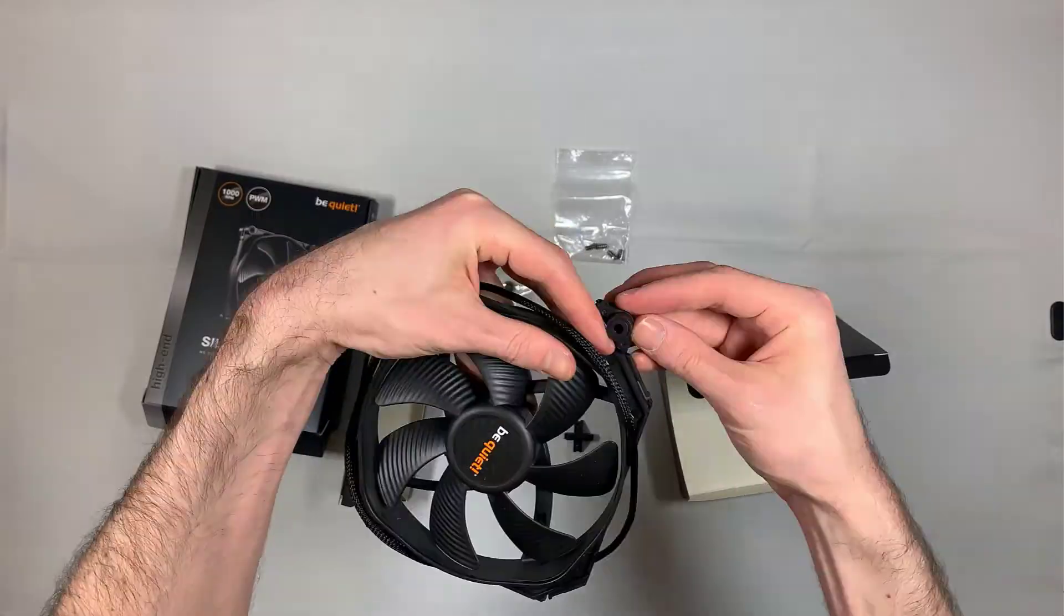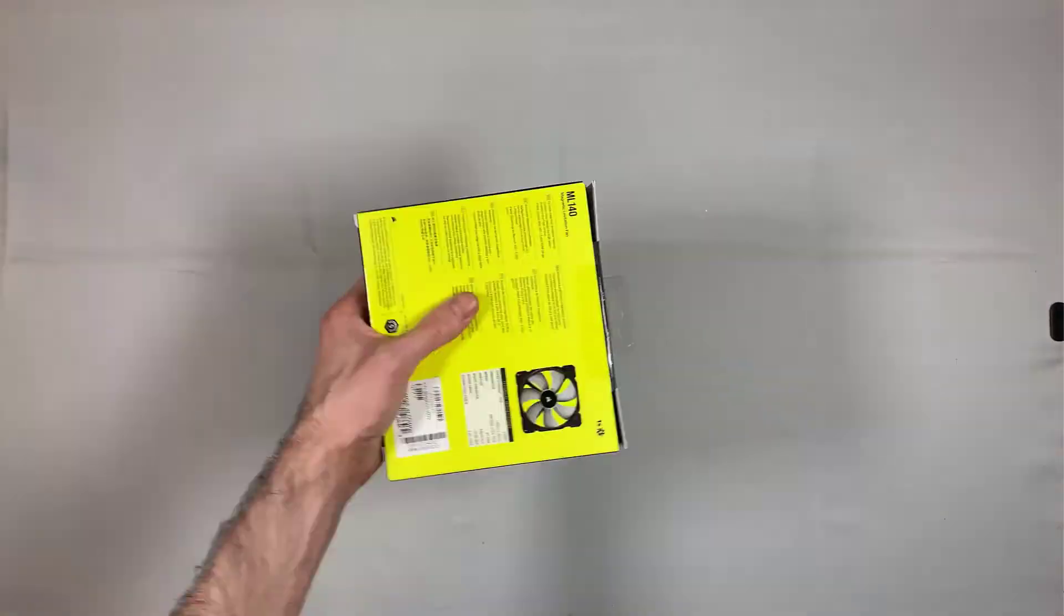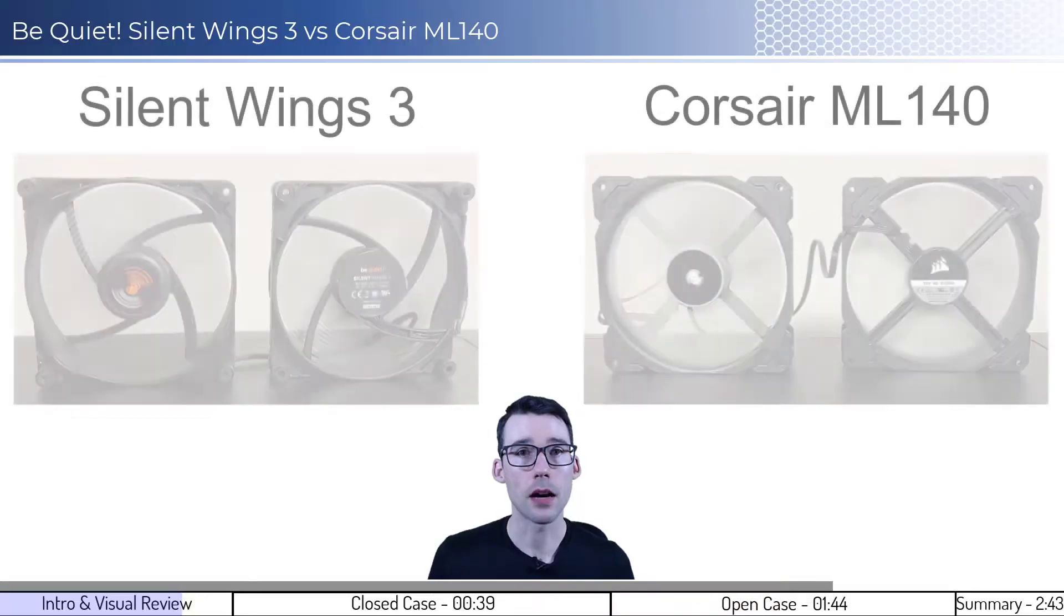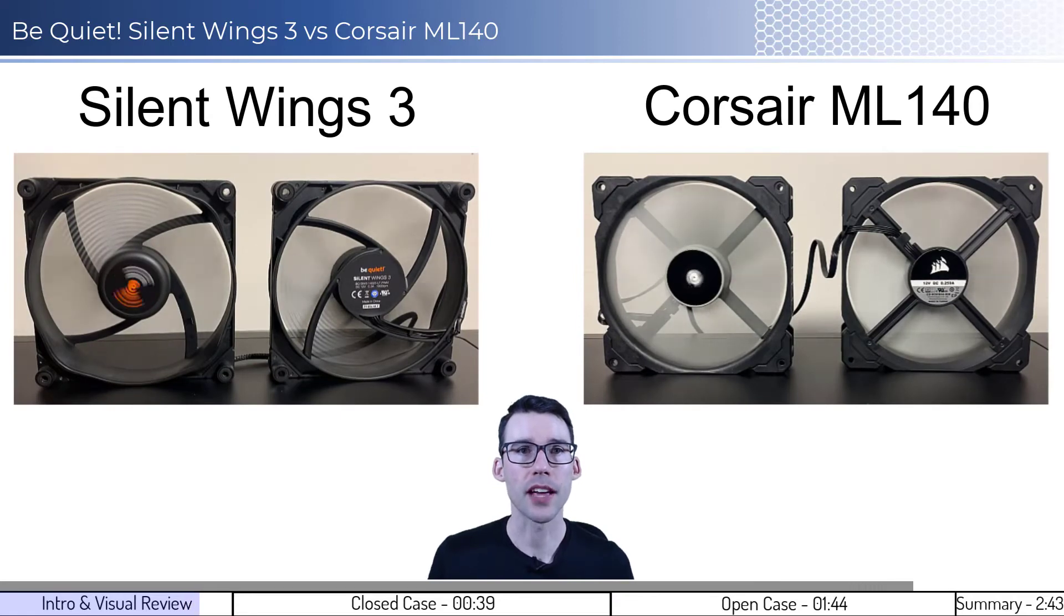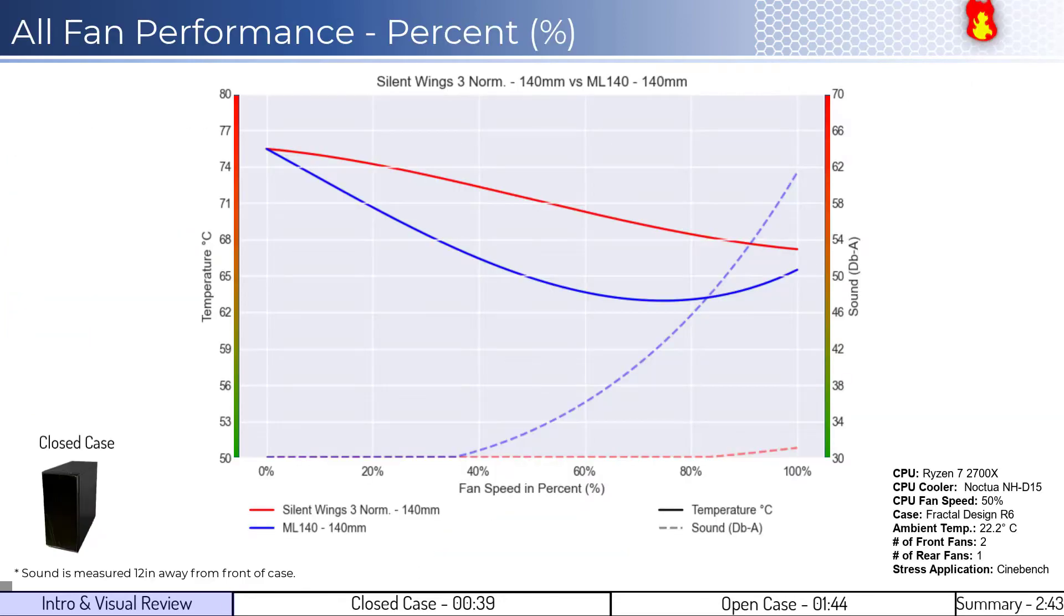The slowed version links of the unboxing can be found in the description below. Now, let's look at the fans in action. In each video, the left fan is blowing air away from the camera, and the right fan is blowing air to the camera. Now, let's dig into the performance. For the first set of comparisons, we'll look at the closed case design, which helps us understand which fan is better at creating static pressure.